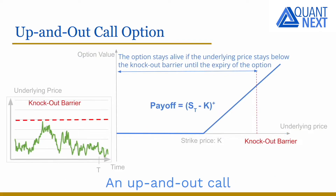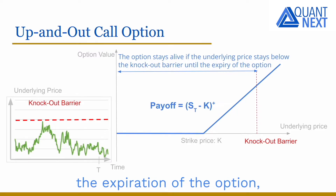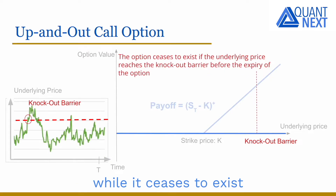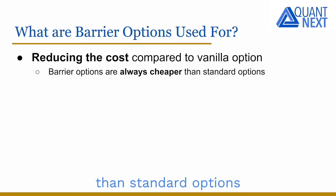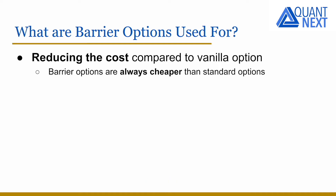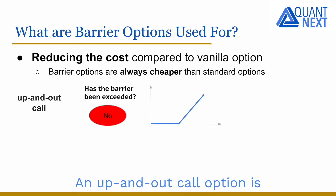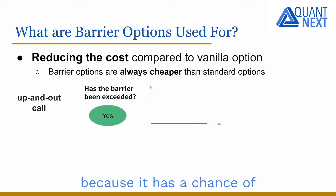An up and out call stays alive if the underlying stays below the barrier until the expiration of the option, while it ceases to exist if the underlying reaches the barrier before. The cost is reduced compared to standard options by using barrier options. They are always cheaper than standard options because of the barrier which activates or deactivates the optionality. Typically, an up and out call option is always cheaper than a similar call option without the barrier because it has a chance of being knocked out.